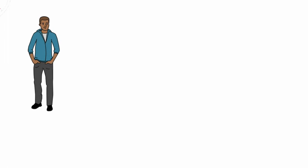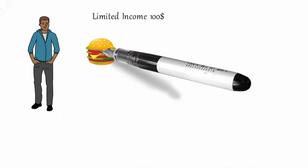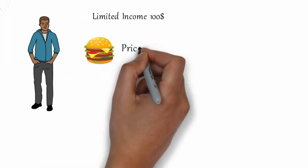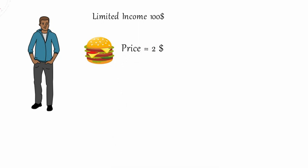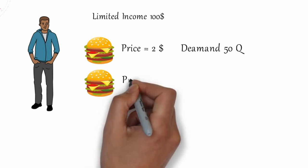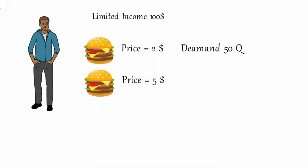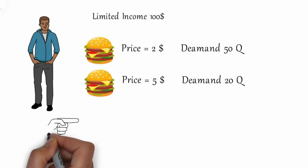This is Alex. He just has limited income, that is $100. He purchases only cheeseburgers. The price of a cheeseburger is $2 and he can buy 50 cheeseburgers. Suddenly the price of a cheeseburger increases. The price of a cheeseburger is $5 and he can buy 20 cheeseburgers.